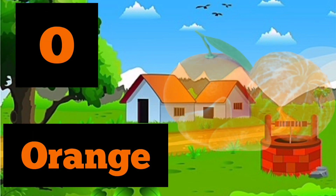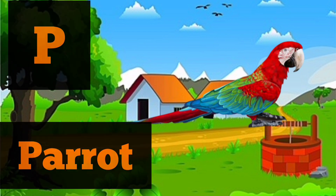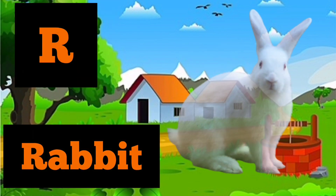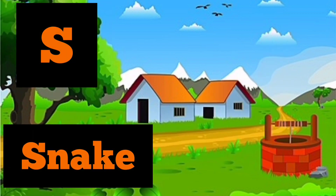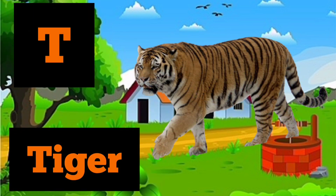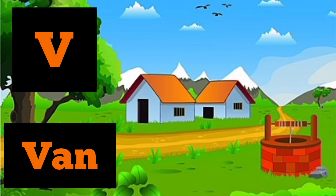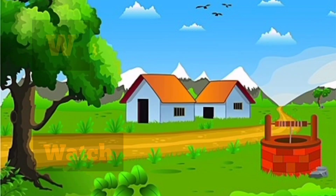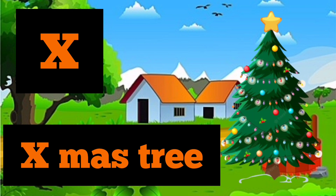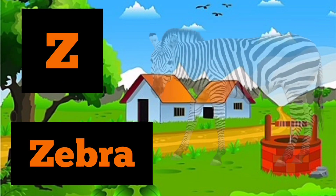O for orange, P for parrot, Q for quill, R for rabbit, S for snake, T for tiger, U for umbrella, V for van, W for watch, X for Xmas tree, Y for yak, Z for zebra.